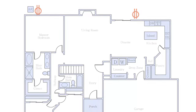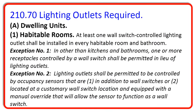Moving into Article 210.70, which is the last article we will deal with in Article 210, we see that it's required to have a wall switch controlled lighting outlet in every habitable room and each bathroom. There are exceptions to this code, and in other than kitchens and bathrooms, one or more receptacles controlled by a wall switch shall be permitted instead of an actual light fixture. Which means in kitchens and bathrooms, we have to have a light fixture that's controlled by a wall switch.